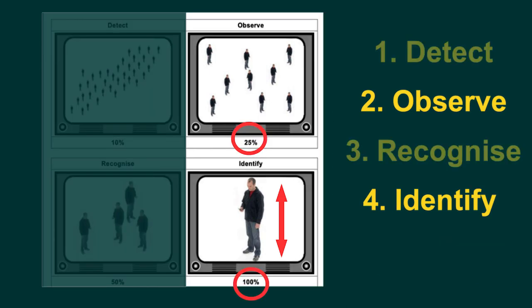We're just going to pay attention to observe and identify for now. These are not official — just rough guide principles. When observing, the proportion of the individual's height in relation to the monitor's length is about 25%, and when identifying it's about 100%. I'm going to give you two real-life examples for these.